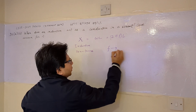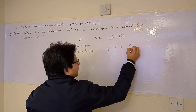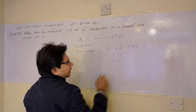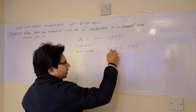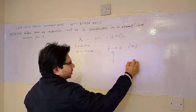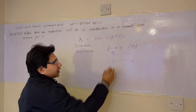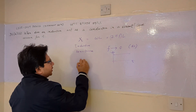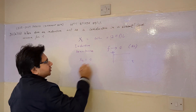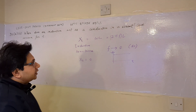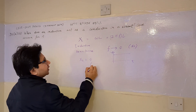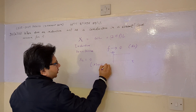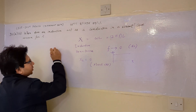Now suppose we apply a DC signal. A DC signal looks like this — a constant signal with respect to time — so it has a frequency of 0. When the frequency is 0, the inductive reactance is 0. And when the inductive reactance is 0, it means that this is a kind of a short circuit.